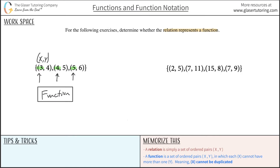You could also graph this — plot these ordered pairs. You'd go (3,1), (4,5), (5,6) and plot the points. You'd realize this is looking like a straight line. Then you could do the vertical line test: draw a vertical line through the graph and see if it intersects more than once. It doesn't — any vertical line drawn does not intersect more than once. So according to the vertical line test, we pass it and can call this a function.